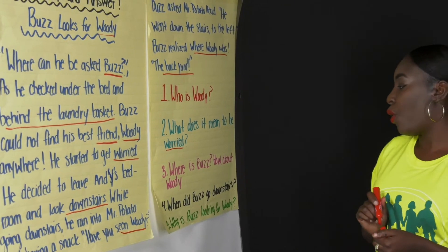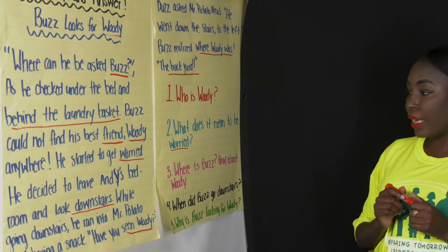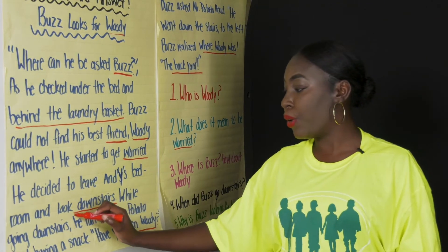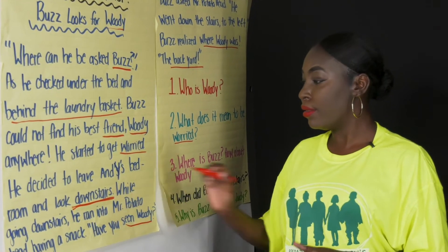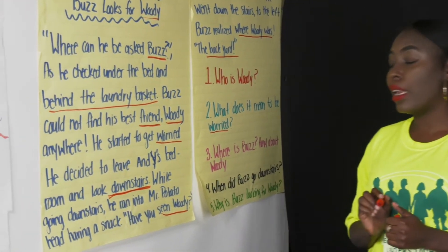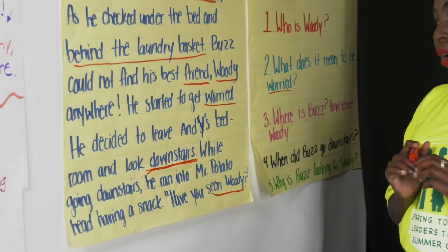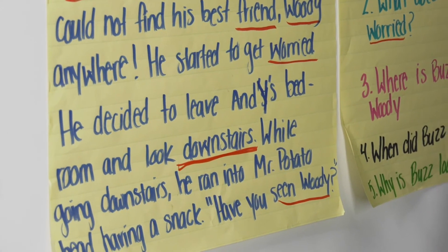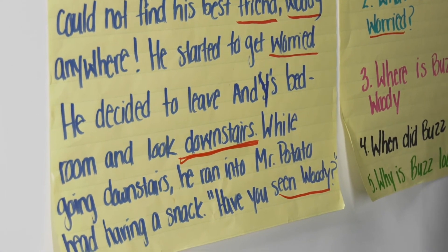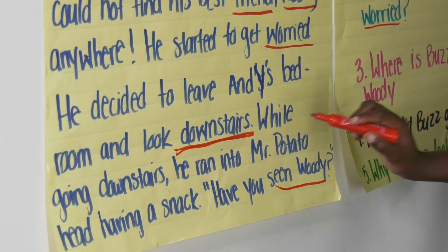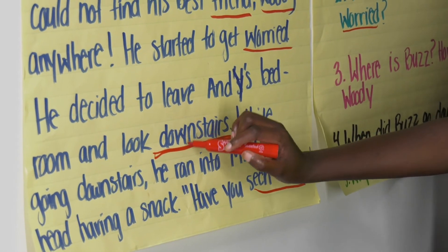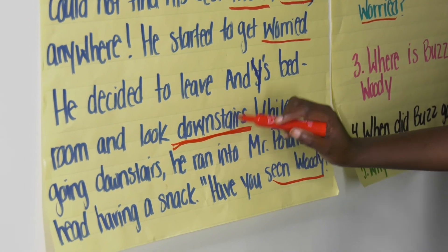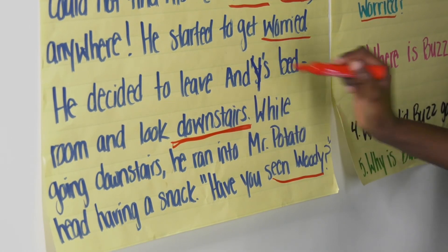Number four: When did Buzz go downstairs? We already have our keyword underlined. Let's read the sentence: He decided to leave Andy's bedroom and look downstairs. So we can say that he went downstairs because he could not find Woody in Andy's bedroom.